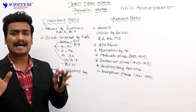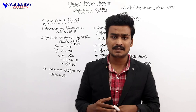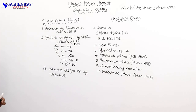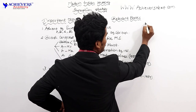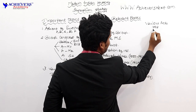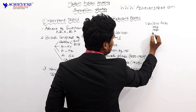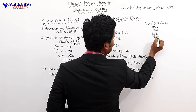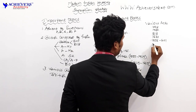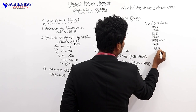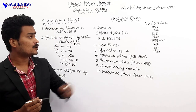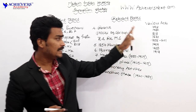Modern Indian history also includes various important Acts: the 1773 Regulating Act, the 1784 Pitt's India Act, the 1813 Charter Act, the 1833 Charter Act, the 1858 Government of India Act, the 1909 Act, the 1919 Act, and the 1935 Act. We must study each of these acts carefully, as each has its own relevance.